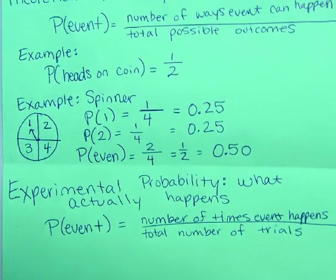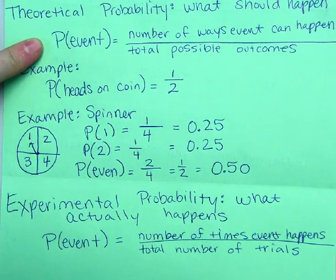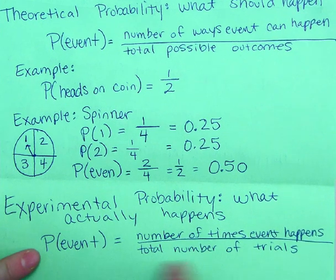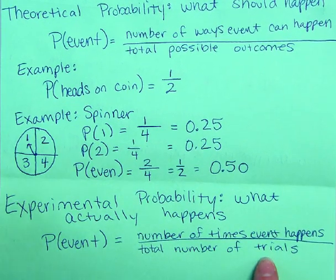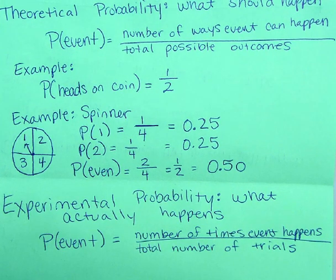And then you can do probability of event equals number of times event happens over total number of trials. So that's how many times did you do the experiment. So if you compare these, this is theoretical. Number of ways event can happen over total possible outcomes. Experimental is number of times event happens. So you're actually rolling the dice or drawing from a jar of marbles over total trials. So that's how many times did you do the experiment? How many times did you roll the dice? So that's what experimental probability is.